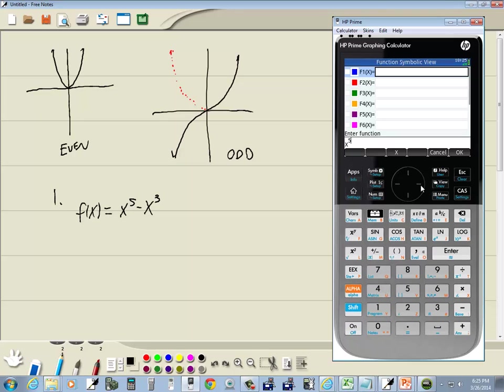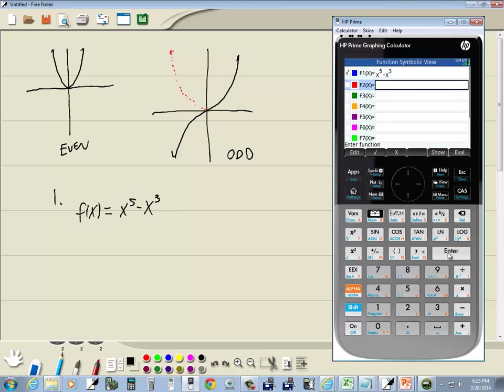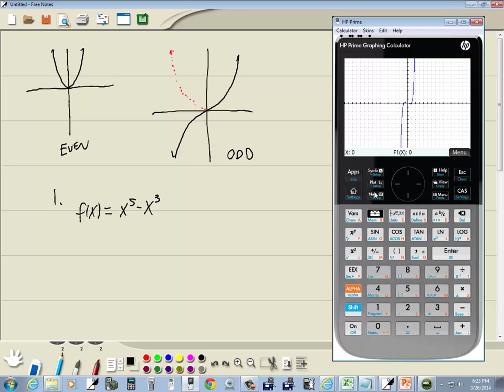I'll do my right arrow key to get it out of the exponent, minus x, and then my x to the y, and then 3, and press enter. And now let's graph this. So we're going to press plot, and this is what we see.